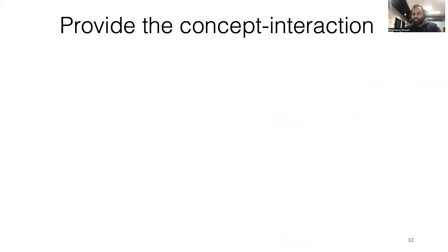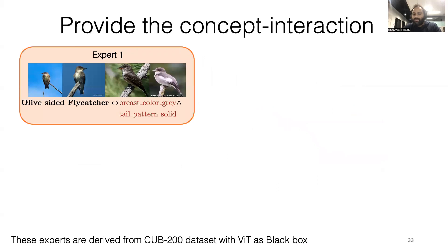First, we show our method identifies diverse concepts. For example, here, the breast-color gray and the tail-pattern solid are unique to Expert 1 for these four samples to identify them as olive-sided flycatcher.